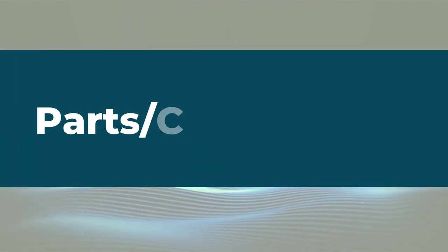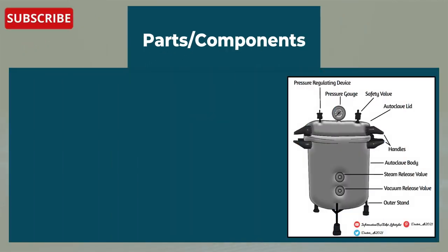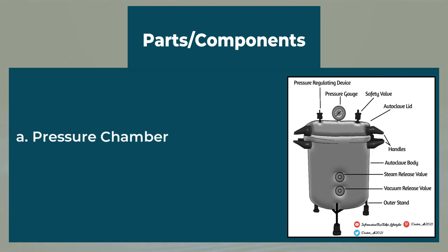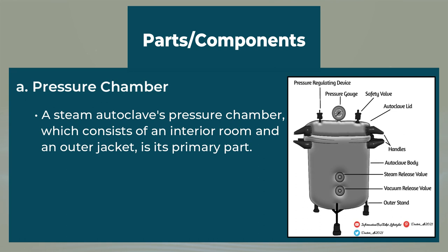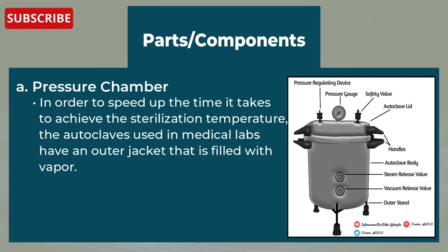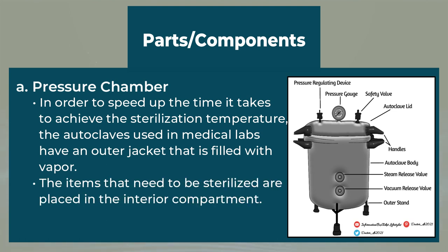Let's head to the autoclave parts or components. The pressure cooker type or laboratory table autoclaves are the most basic types. The various elements and components of an autoclave are described. First, we have the pressure chamber. A steam autoclave's pressure chamber, which consists of an interior room and an outer jacket, is its primary part. The outer compartment is made of an iron case and the interior chamber is made of stainless steel or gun metal. The autoclaves used in medical labs have an outer jacket filled with vapors to speed up reaching the sterilization temperature. The items to be sterilized are placed in the interior compartment.